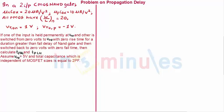Let's understand the question. The question says that in a two input CMOS NAND gate, mu n cox is equal to 20 micro ampere by volt square, mu p cox is equal to 10 micro ampere by volt square.